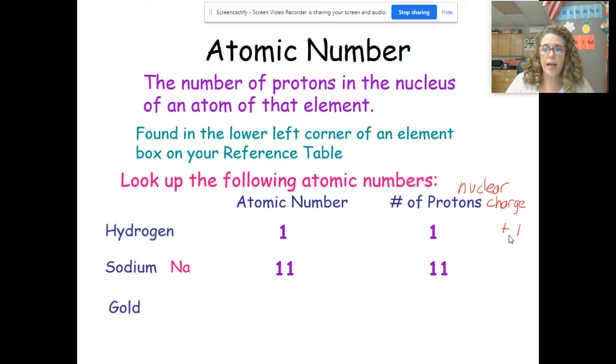Now we have gold, and I like to say 'Au, give me your gold,' again coming from its Latin, so that's why it's not a G. The atomic number is 79, number 79 on the periodic table. That means it has 79 protons, that means it has a nuclear charge of positive 79. There's 79 positive charges in the nucleus. Remember, there's neutrons in the nucleus but there's no charge on a neutron.